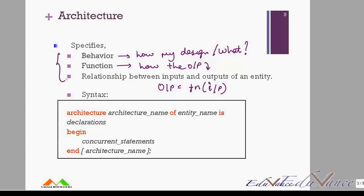Obviously the output is a function of the input, so the architecture typically specifies all these three points: the behavior, function, and relationship. We know that the syntax is architecture keyword, the architecture name which is specified by you. The entity name must be the same as the entity of your design. Then we will have some declarations here like signals and variables which we will see in a future lecture, and then we have some concurrent statements.